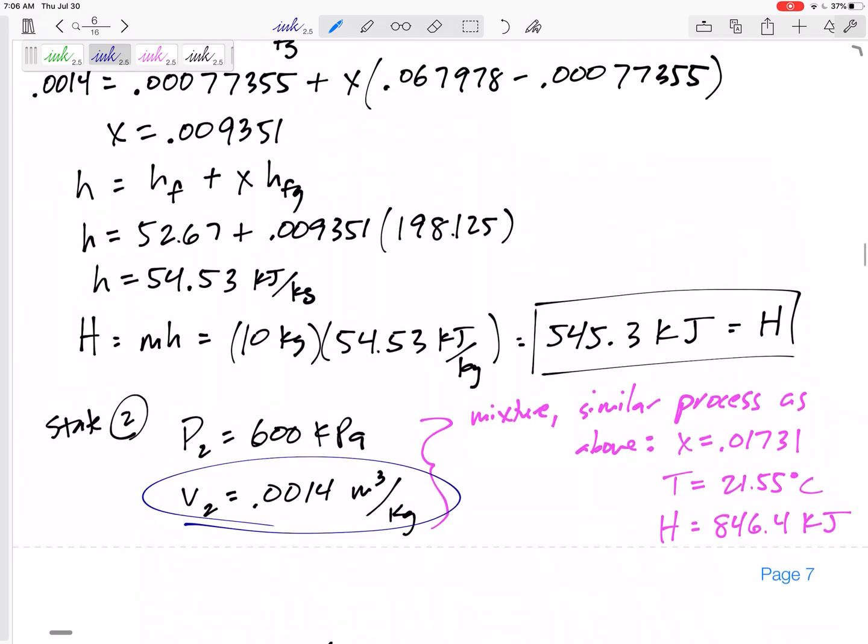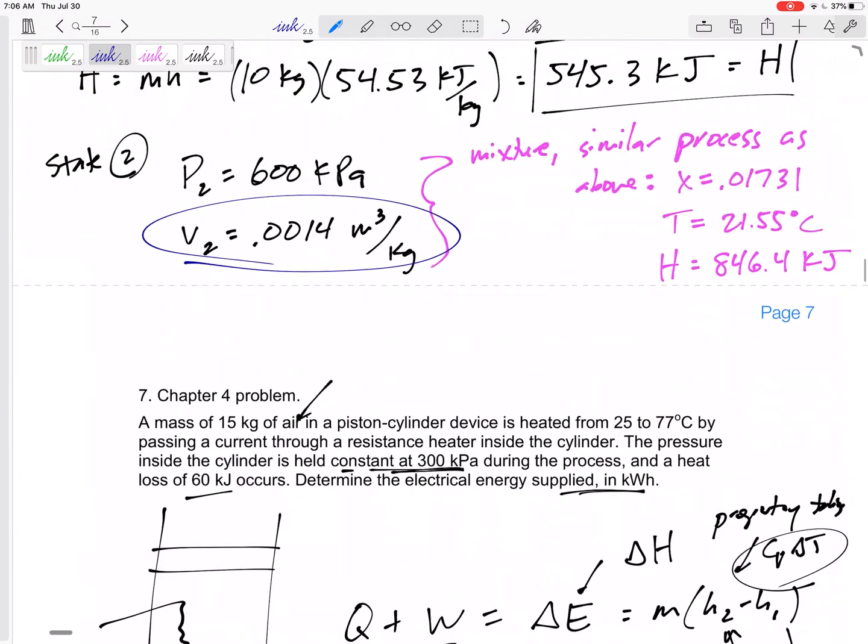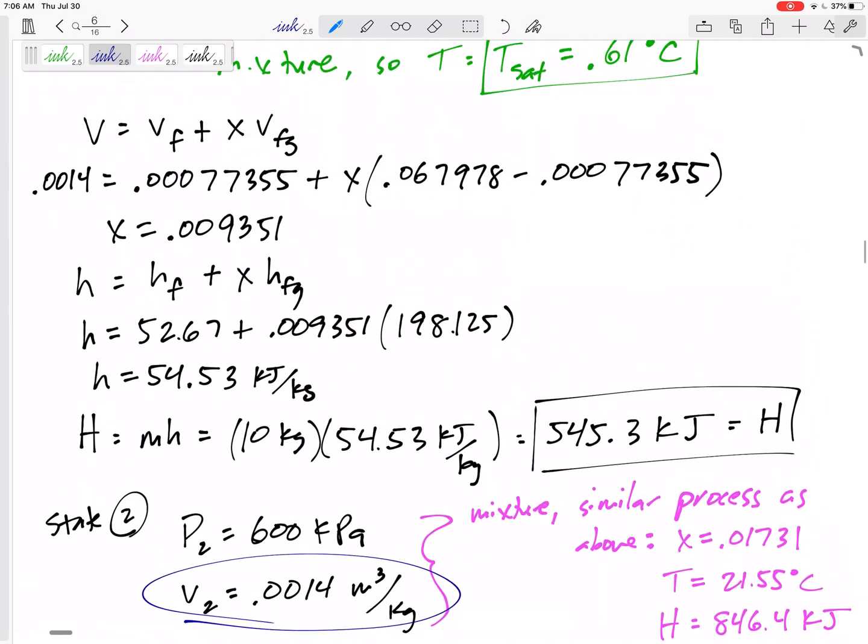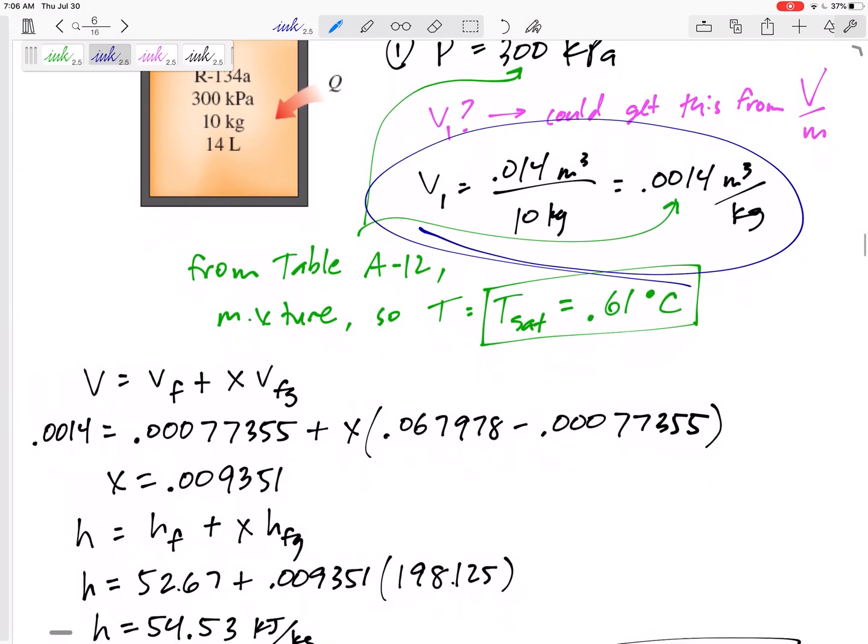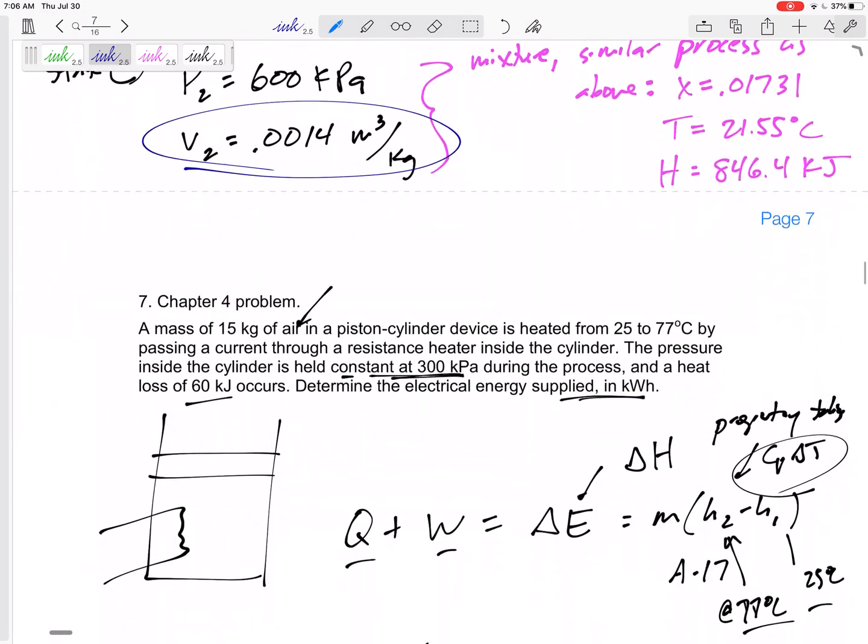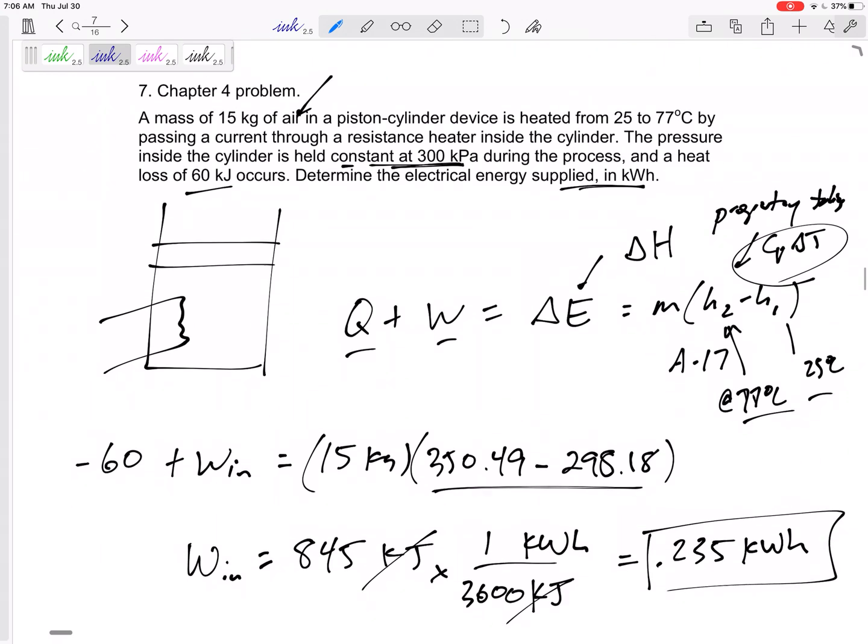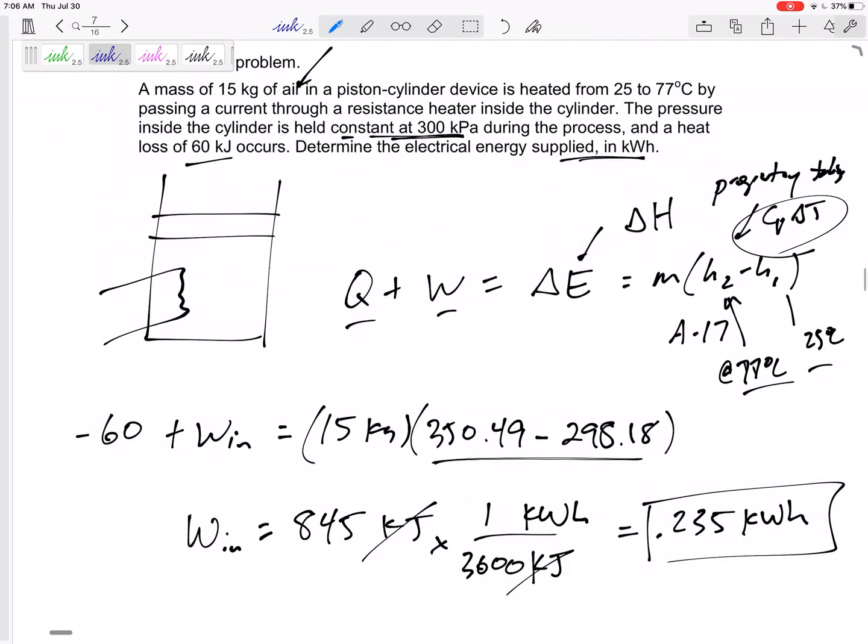And then I didn't do it for this problem, but you might have a Q plus W equals delta. You'd have delta U for a rigid tank. And then look at the boundary work. Sometimes if it's not an easy, either constant volume or constant pressure, then you do have to calculate boundary work here on the left-hand side of our equation in order to solve for any other work or Q or delta H.